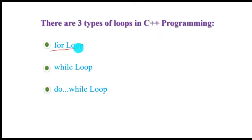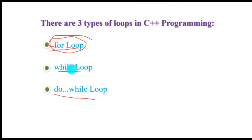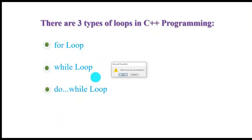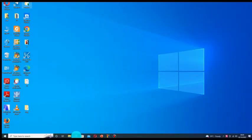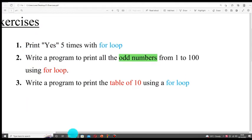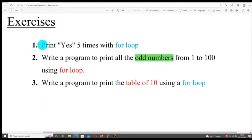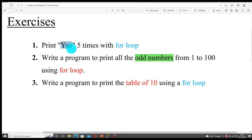There are three types of loops in C++ programming, or any other language such as Java or Python: for loop, while loop, and do while loop. On today's video we only cover the for loop, and in the next session we will see while loop and do while loop. Let's see some instructions. For instance, there is an exercise: print the word 'yes' five times with a for loop.